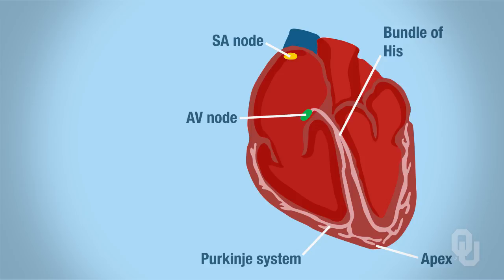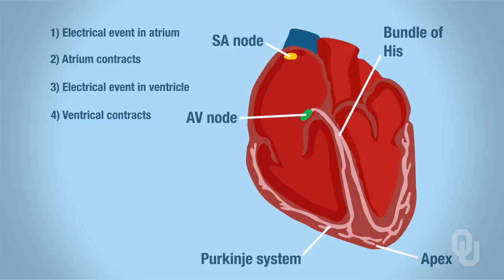Here's the concept—action potentials spread through the atria, that's your electrical event, then they contract. Then the action potentials spread through the ventricles, that's your electrical event, then the ventricles contract. Notice there's a rhythm here. Electrical event through the atria, then the atria contract. Electrical event through the ventricles, then the ventricles contract.